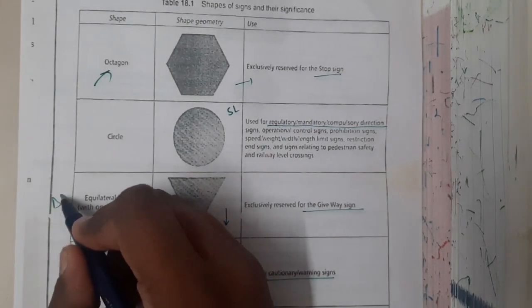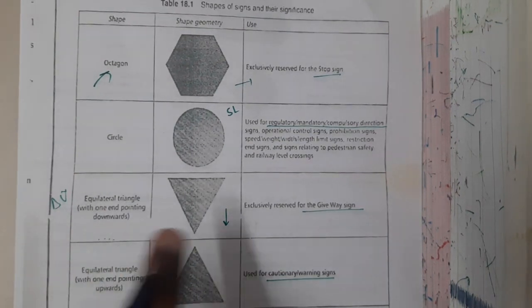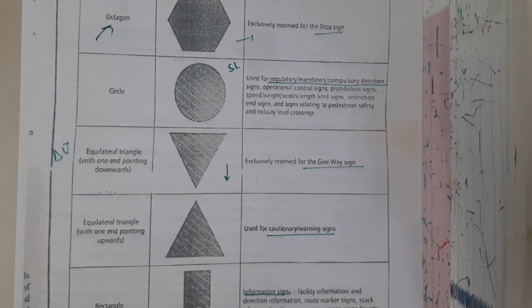The down arrow is used only for give way, please remember that. The upper triangle will be used for warning signs - any kind of caution like narrow bridges, turnings or sudden streets, and all those things, pedestrian walks and all those things.